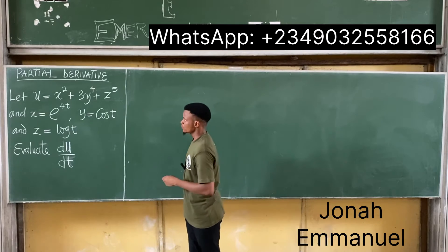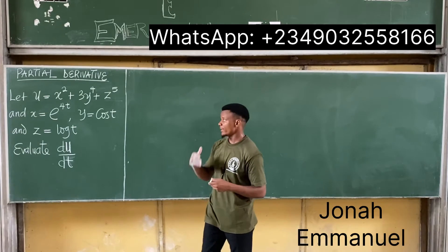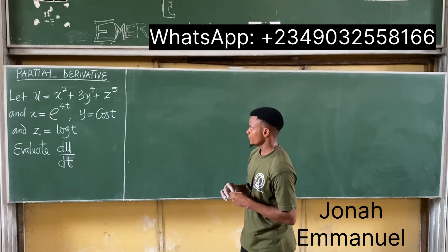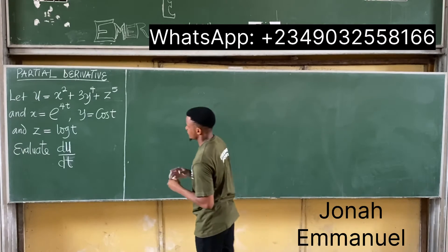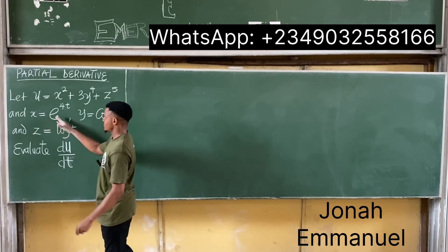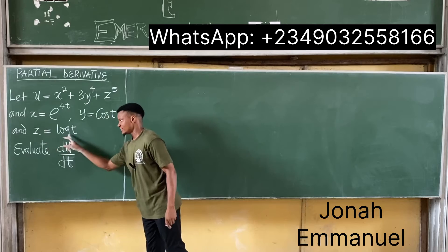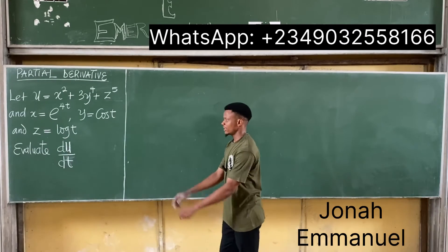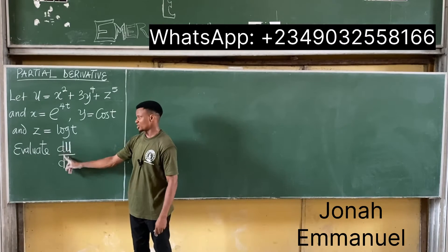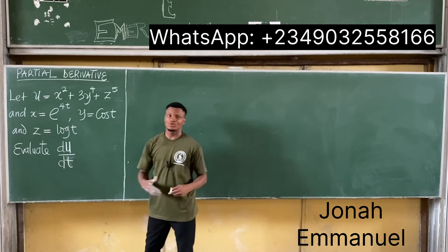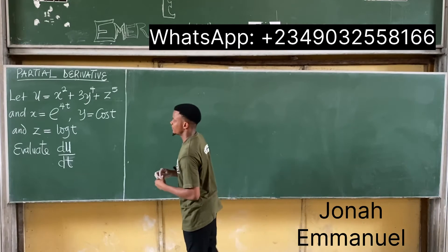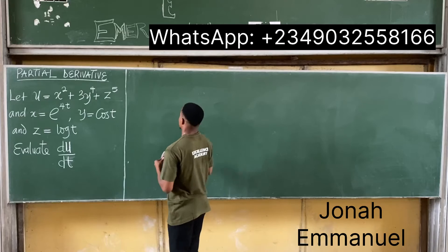The question says: let u equal x squared plus 3y to the power 4 plus z to the power 5. Given that x, y, and z are each functions of t, evaluate du/dt. Observe that the straight d tells you it's a total differential problem.